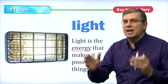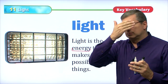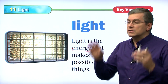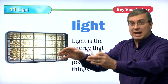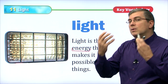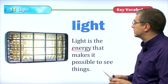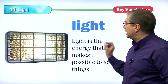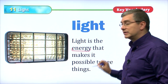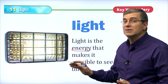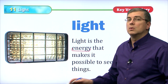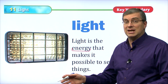If we don't have light, there's no light, we can't see things. So light is energy that hits something, bounces back, and we can see it with our senses. Light is energy that makes it possible to see things. Without light, we cannot see. We need light to see.